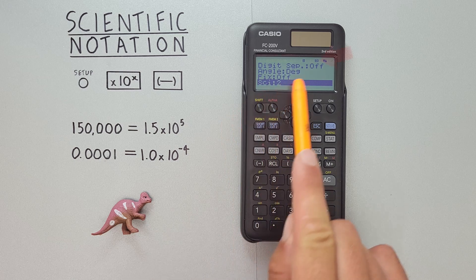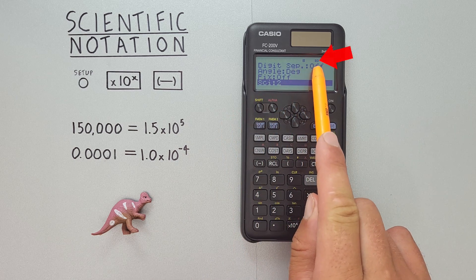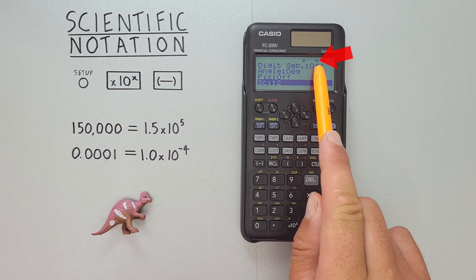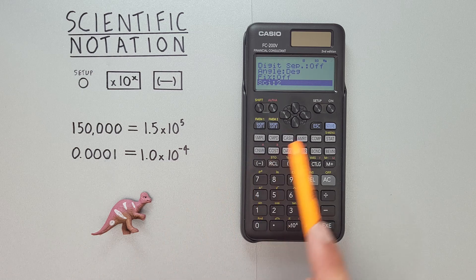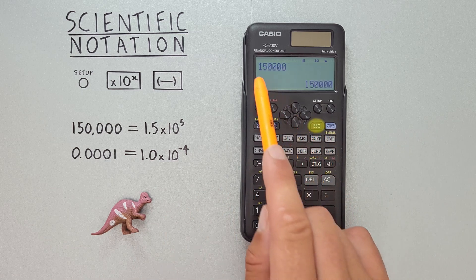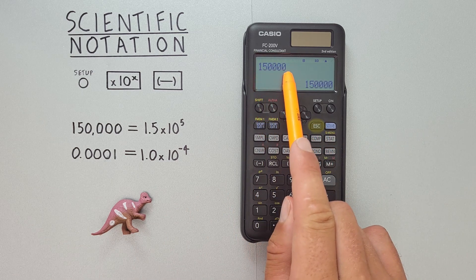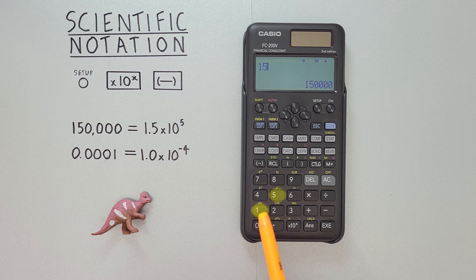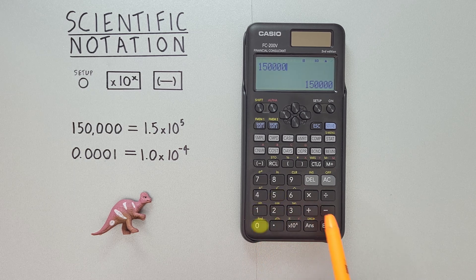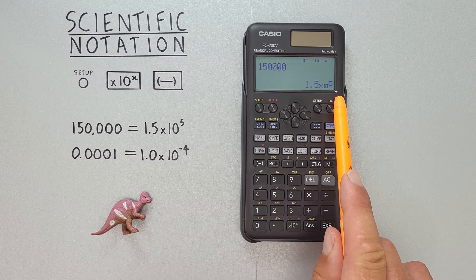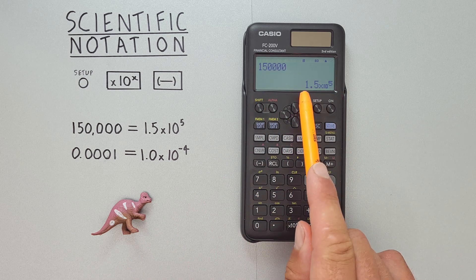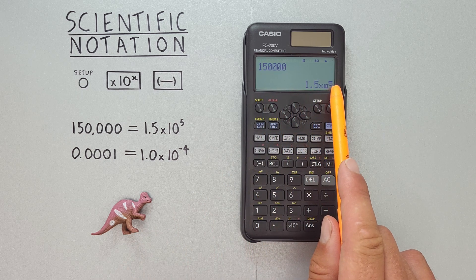We now see the word SCI appear at the top of our screen, letting us know we're in scientific notation mode. And if we hit escape from here, we can now enter our number, hit EXE, and see our number has been converted to scientific notation at 1.5 times 10 to the power of 5.